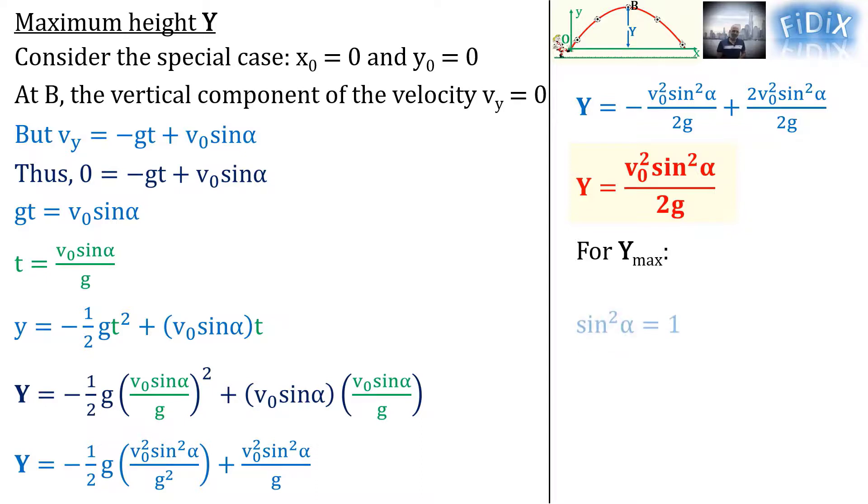This equation has two possible solutions. The first one is sin α equals negative one, thus α equals −90 degrees. This solution is rejected since the projectile is not launched downward.